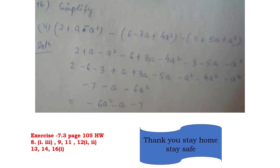Question number 16 is simplify. They have given some expressions all together and are asking to simplify. We have already done the same kind of questions a number of times. The question is: 2 plus a minus a square, minus 6 minus 3a plus 4a square, minus in the bracket 3 plus 5a plus a square. Taking all the like terms together, you will get the answer as minus 7 minus a minus 6a square, and generally we write with the highest power first, so the final answer is minus 6a square minus a minus 7.